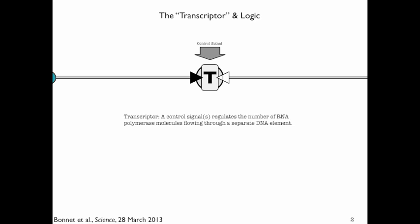Transcriptor is an element within an engineered piece of DNA that controls the flow of RNA polymerase along the DNA. You can think of it as an electrical wire, except instead of having electrons and current being regulated along a wire, we have a molecule DNA. We're controlling an enzyme called RNA polymerase, which is the enzyme that carries out the reading of DNA or transcription. We're controlling whether or not the RNA polymerase can flow along the DNA.